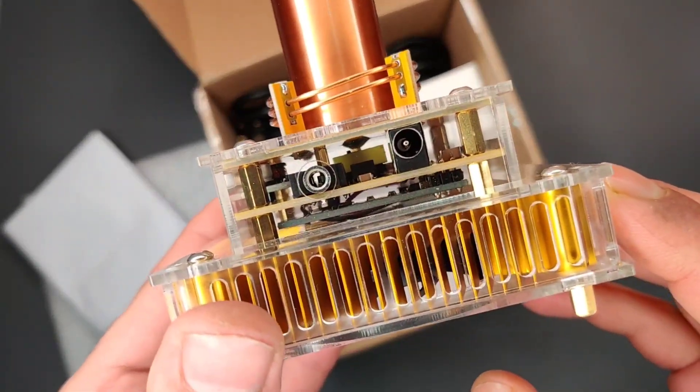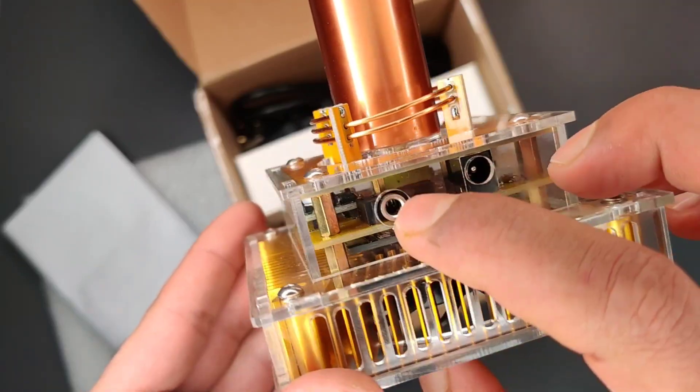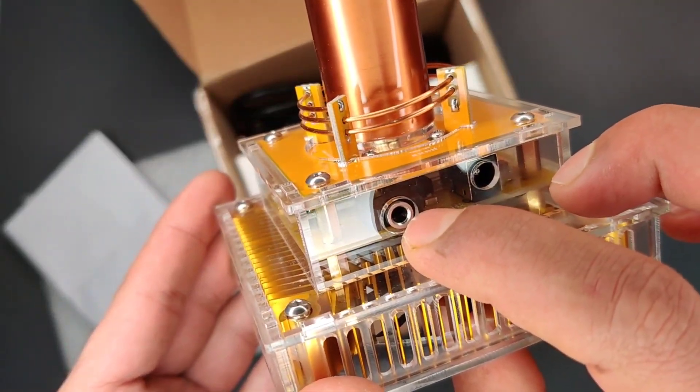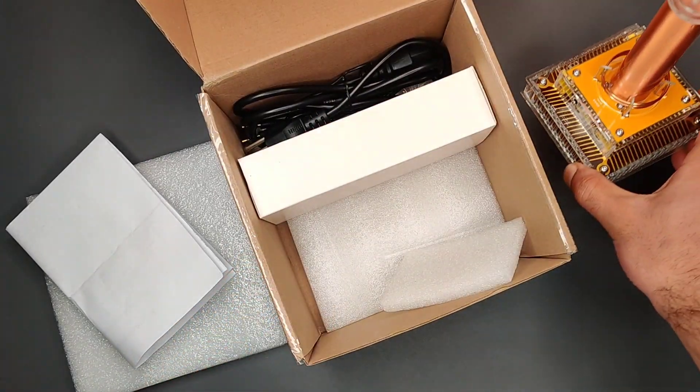Over here is DC input jack, also there is aux audio input jack. Since this comes with Bluetooth already, you have both two options to play songs on this Tesla coil.